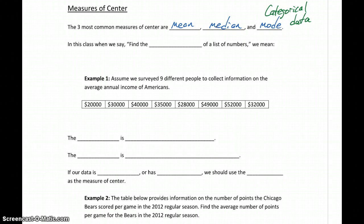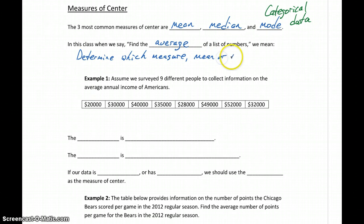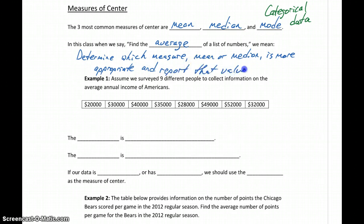So we'll talk about why we have those two different measures and when each one is appropriate. From this point forward, anytime we talk about the average of a distribution or a data set, what we really mean is: determine which measure — either the mean or median — is more appropriate, and report that value. So in this class, 'average' is our general term to refer to either of those two types of measures.